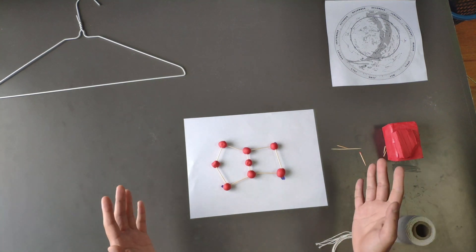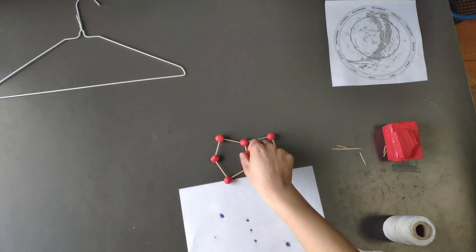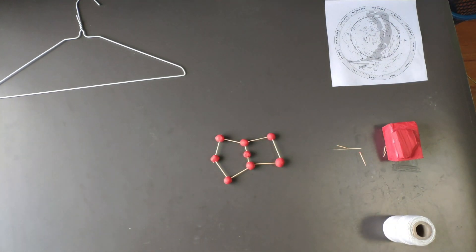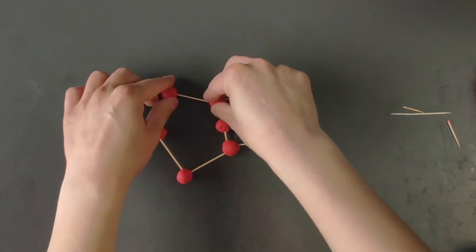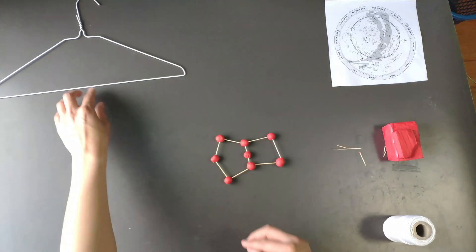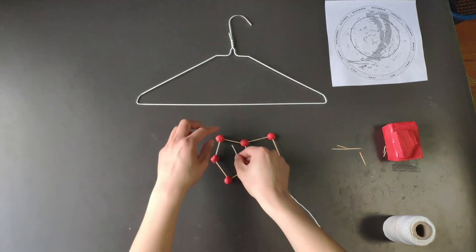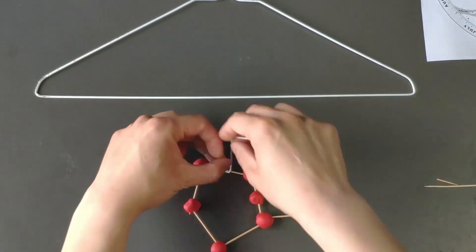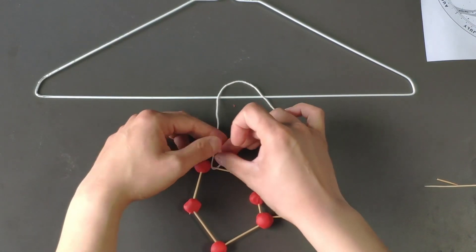All right, now that you have your constellation made, you can take off the piece of paper. Make sure you give it a little extra pinch by this area so that they don't fall apart where the holes are. Bring your hanger in, and we're now going to hang our constellation. So take your string and tie a knot just right here.